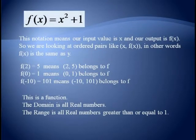Let's relate this back to our first model. Suppose we had f(x) = x² + 1. This notation means our input value is x and the output is f(x). So we would have ordered pairs of the form (x, f(x)). So f(x) is basically the same as our y value, but has the advantage of carrying along the name of our function. Since f(2) = 5, we know that the ordered pair (2, 5) belongs to our function. Likewise, f(−10) = 101, so the ordered pair (−10, 101) belongs to our function.